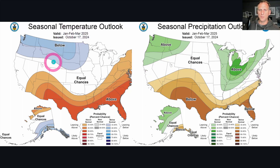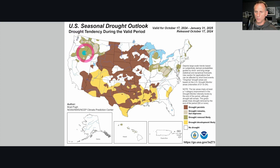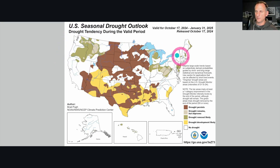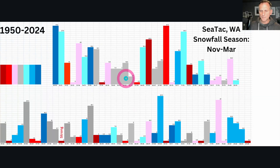Looking at January through March, the same above-average precipitation and below-normal temperature signal continues all the way into early spring. Also worth noting — the U.S. Seasonal Drought Outlook valid from October 17th through January 31st shows drought removal likely for much of Oregon, Washington, Idaho, and some of western Montana, where there has been some extreme and exceptional drought. This is very nice to see, and hopefully the above-average precipitation verifies to help set the stage for a less severe fire season going into next year.